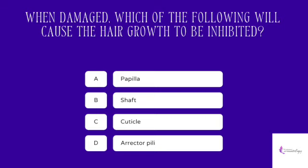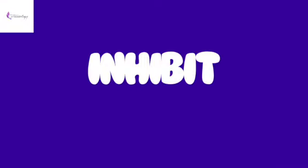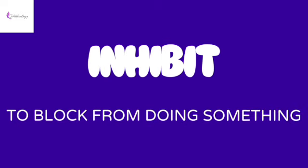When damaged, which of the following will cause the hair growth to be inhibited? A, papula. B, shaft. C, cuticle. D, erector pili.